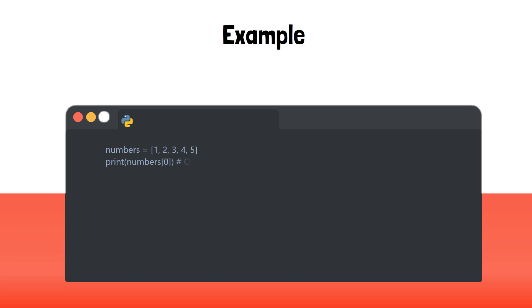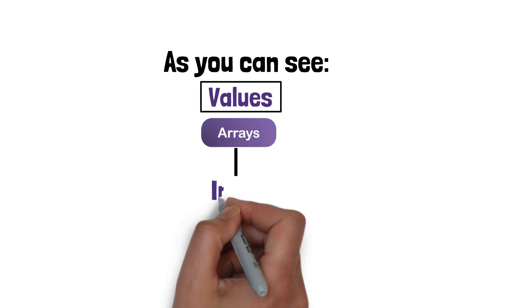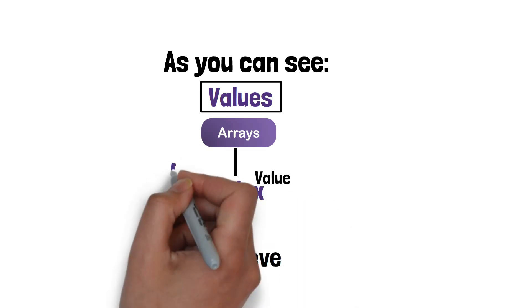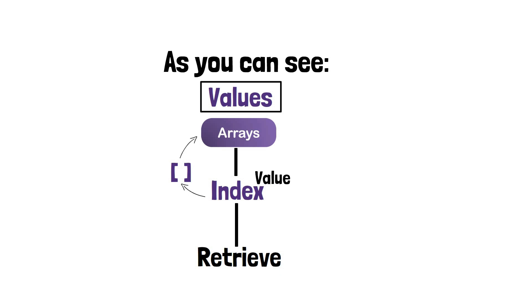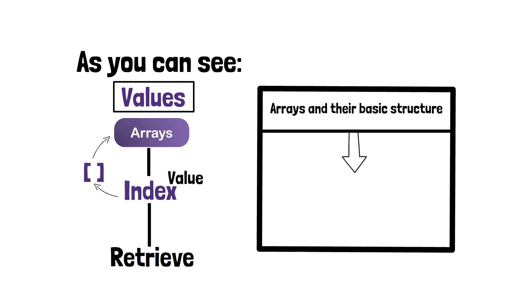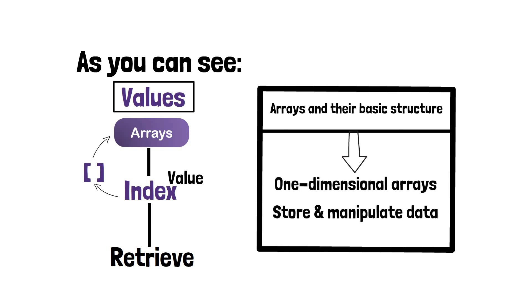Let's take a look at how we can access values in an array using an index. As you can see, accessing values in an array is as simple as specifying the index of the value you want to retrieve. The index is placed within square brackets after the name of the array. I hope this gives you a good understanding of arrays and their basic structure. In the next section, we'll dive into one-dimensional arrays and how they can be used to store and manipulate data.